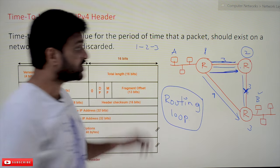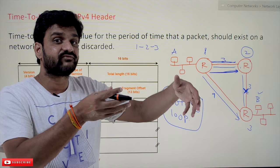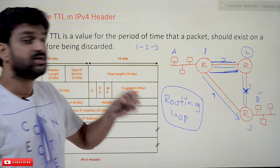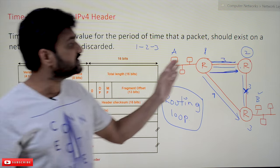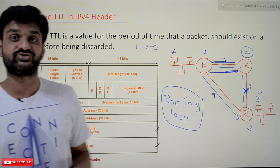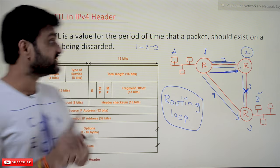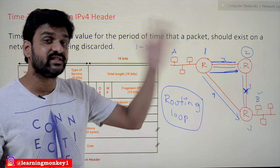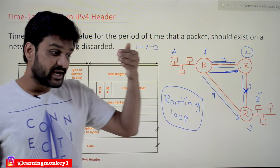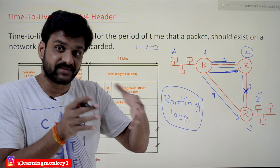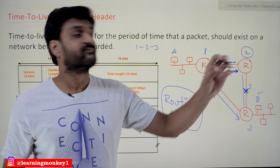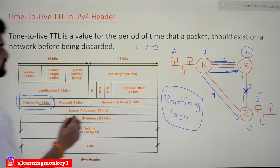Due to routing loop problems in routing algorithms, at a particular period of time there is a possibility of creating routing loops. With these routing loops, the packet will stay in the network indefinitely — for an infinite amount of time. This problem has to be addressed, and it is solved using Time to Live. The value given in the TTL field is the hop count — the number of systems, routers, or computers that the packet traverses.